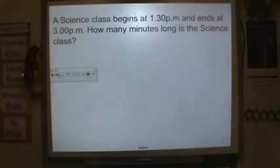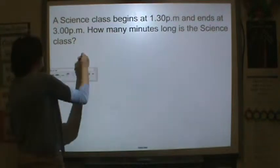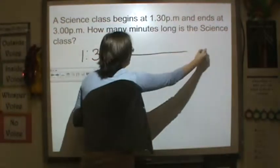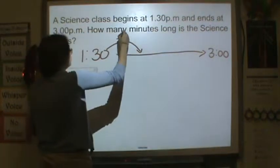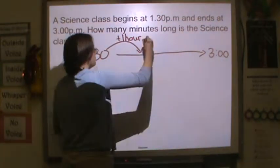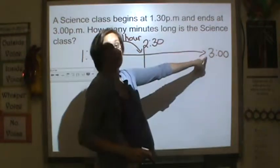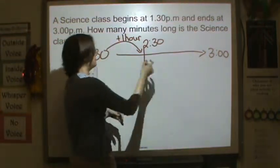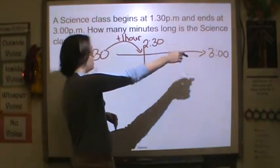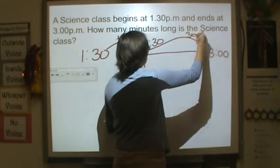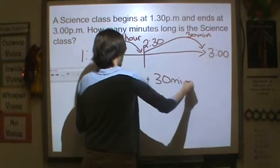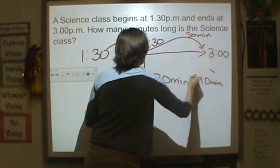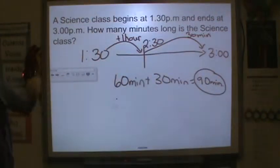Please make sure you're writing this down. A science class begins at 1:30 p.m. and ends at 3 p.m. How many minutes long is that science class? We need to think about how many minutes from 1:30 all the way to 3 o'clock. Well, I know that I'm going to be adding an hour to get to 2:30. If I added another hour, I would have 3:30 — we can't do that. So we have to add by minutes. How many minutes are there between 2:30 and 3 o'clock? 30 minutes. So 1 hour is equal to 60 minutes plus 30 minutes, and that's all equal to 90 minutes. The science class is 90 minutes long.